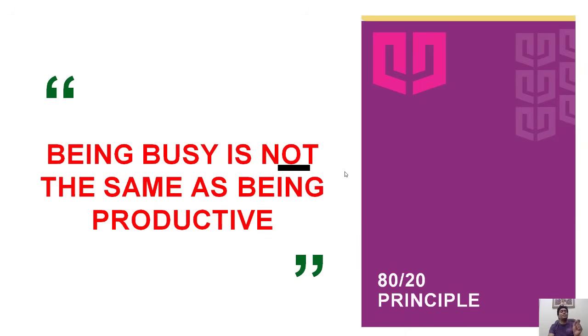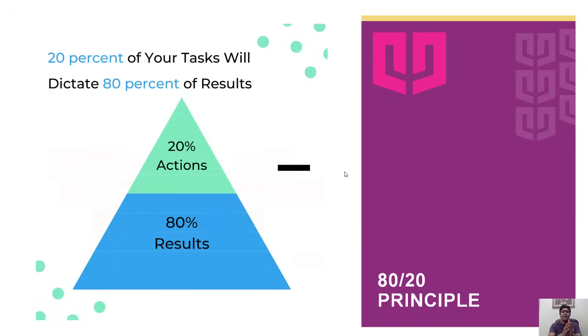The Pareto principle says that 20% of your tasks will dictate 80% of your results. Your vital few 20% produce 80% results. We have to leave the trivial many things and in our daily life find the 20% vital few.